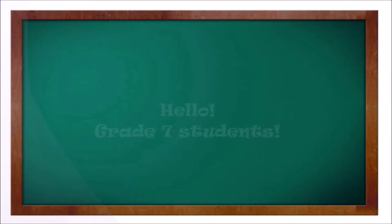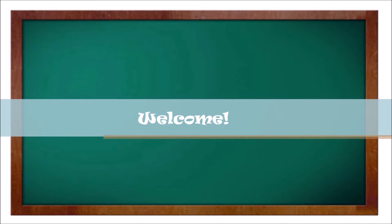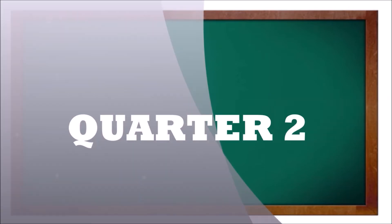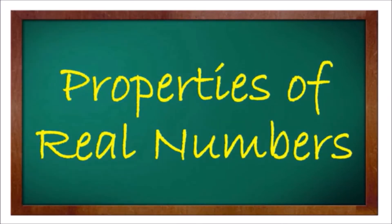Hello Grade 7 students. Welcome to another video discussion. For the second quarter, our first topic is all about properties of real numbers. The real number system has several properties that tell us what we can and cannot do when working with real numbers. We categorize these as either an equality property, because they are about quantities being equal, or a field property, because a mathematical system satisfying such a property is called a field.